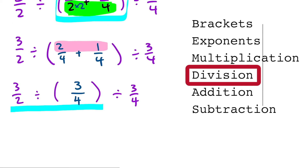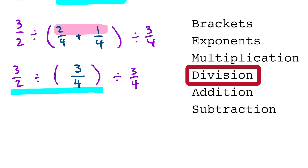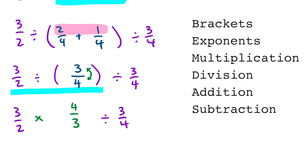In order to divide two fractions, we're going to flip the second fraction, which we refer to in formal math language as taking the reciprocal. So this is going to turn into 4 over 3, and we're going to change the operation from dividing to multiplying. Let's continue to leave the rest of the equation the same, so putting the divided by 3 over 4 at the end.